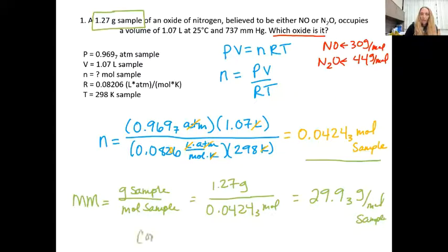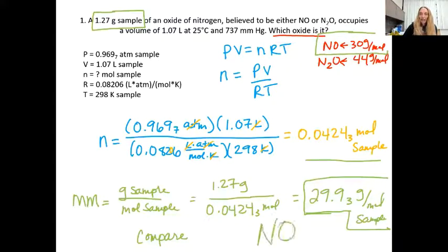So I take 1.27 divided by 0.04243, and I get an answer that is 29.93 grams per mole of sample. And so now I compare. My answer is 29.93 grams per mole. And if you look up here, NO is 30 grams per mole. And so this answer is closest to NO. So when asked which oxide is it, I can say this oxide is nitrogen oxide.